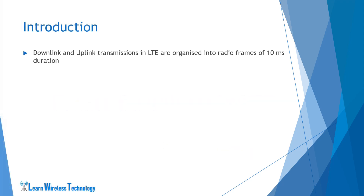In LTE, the downlink and uplink transmissions are organized into radio frames of 10 milliseconds duration. A radio frame is nothing but an arrangement of time slots within which a set of frequency resources or bandwidth is allocated for transmission in downlink and uplink direction.